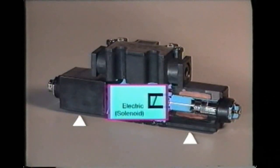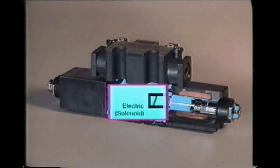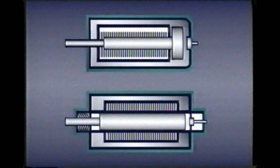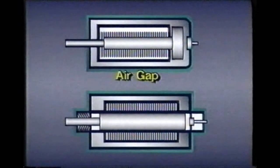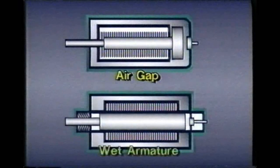Solenoids are electromechanical devices which convert electrical energy into linear mechanical energy. Two types of solenoids are most often used to shift industrial hydraulic valves. They are the air gap type and the wet armature type.